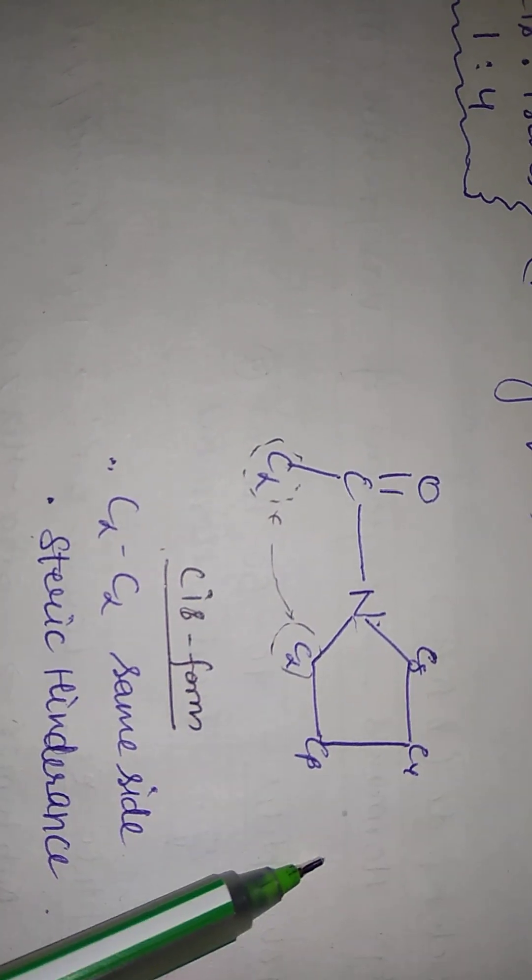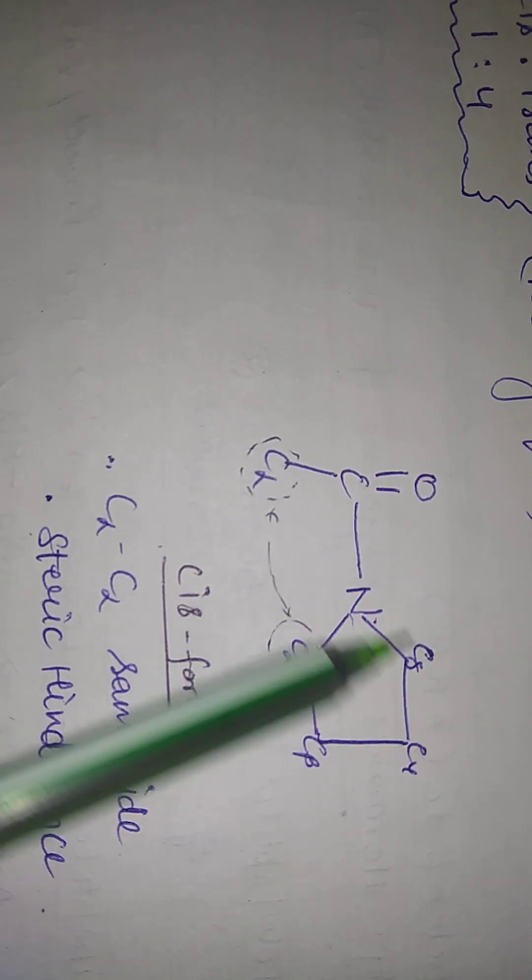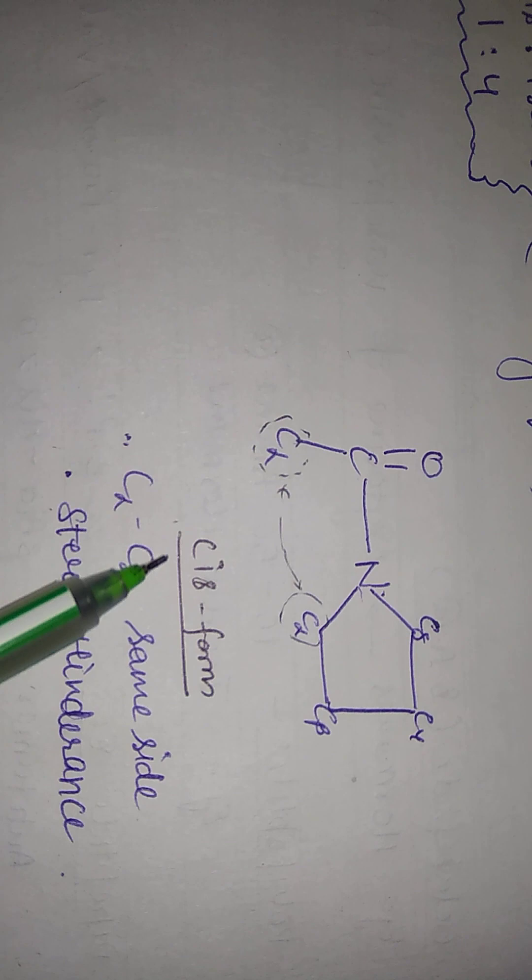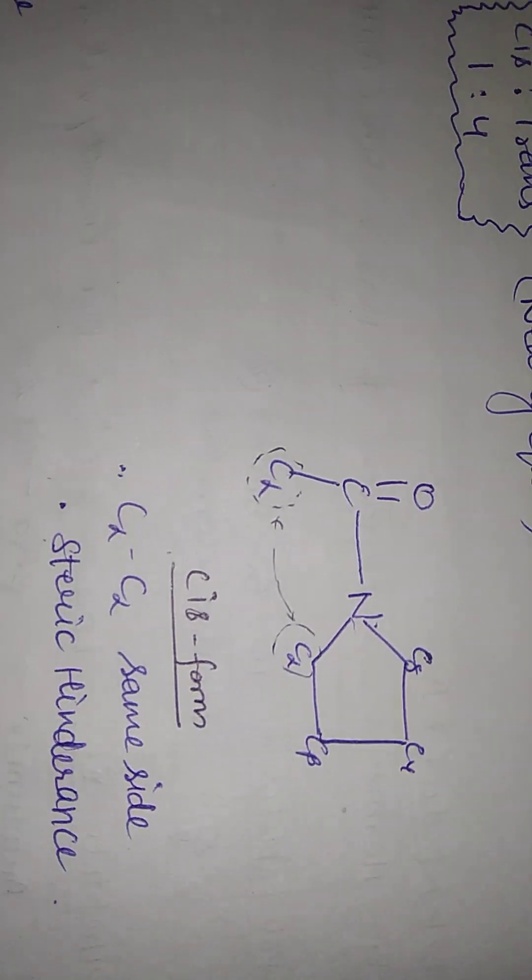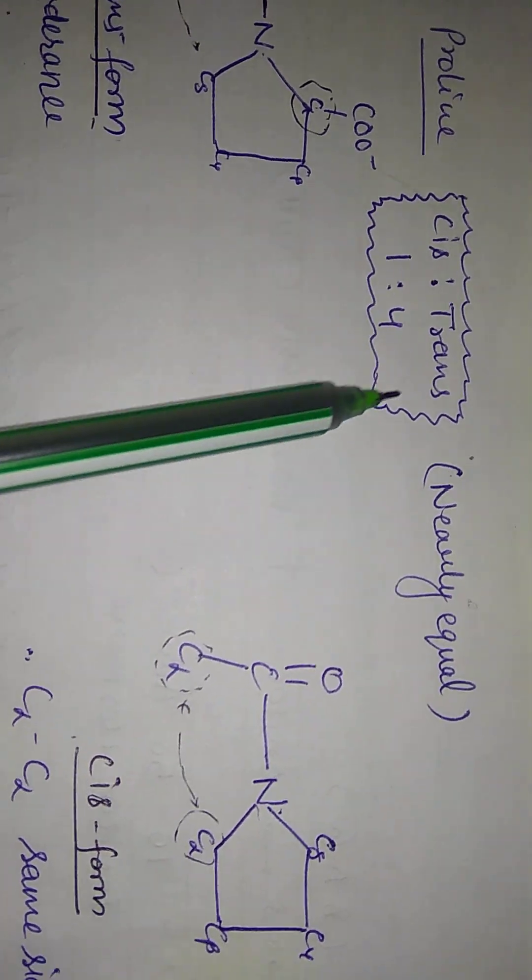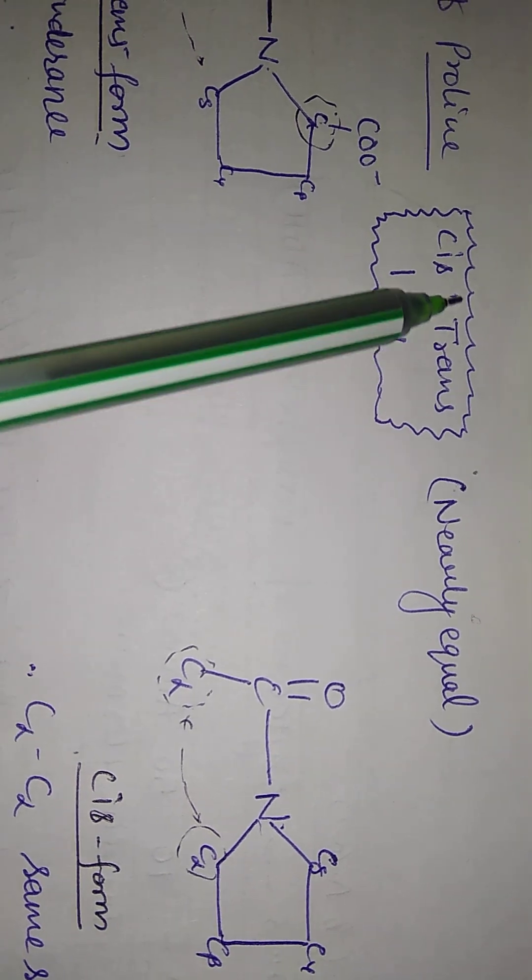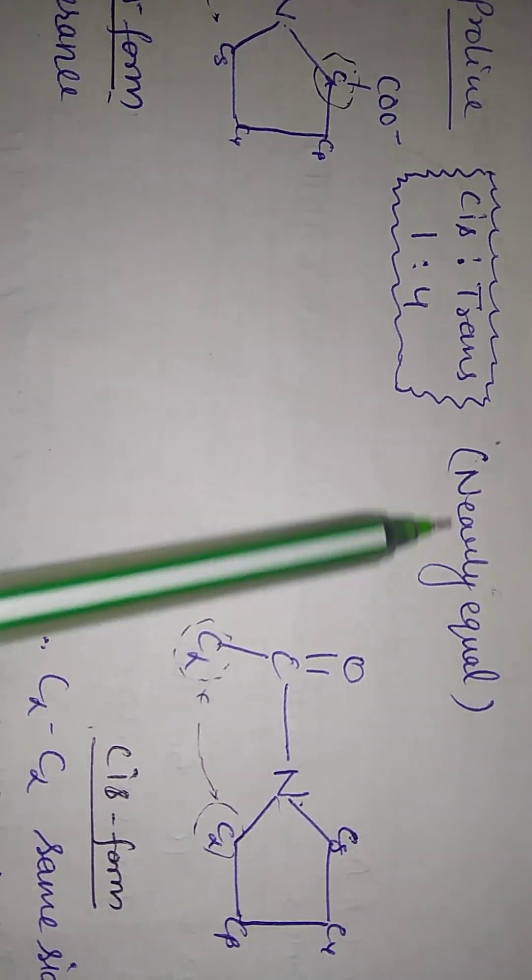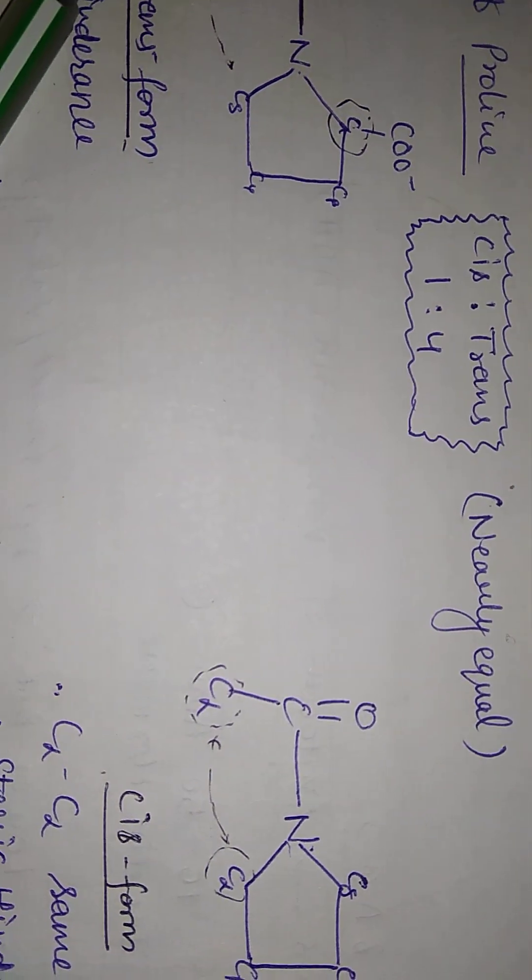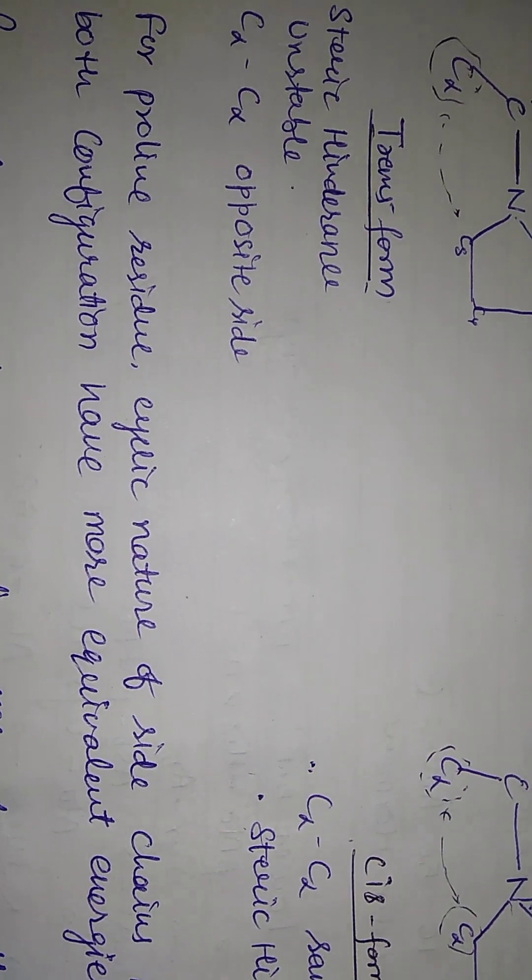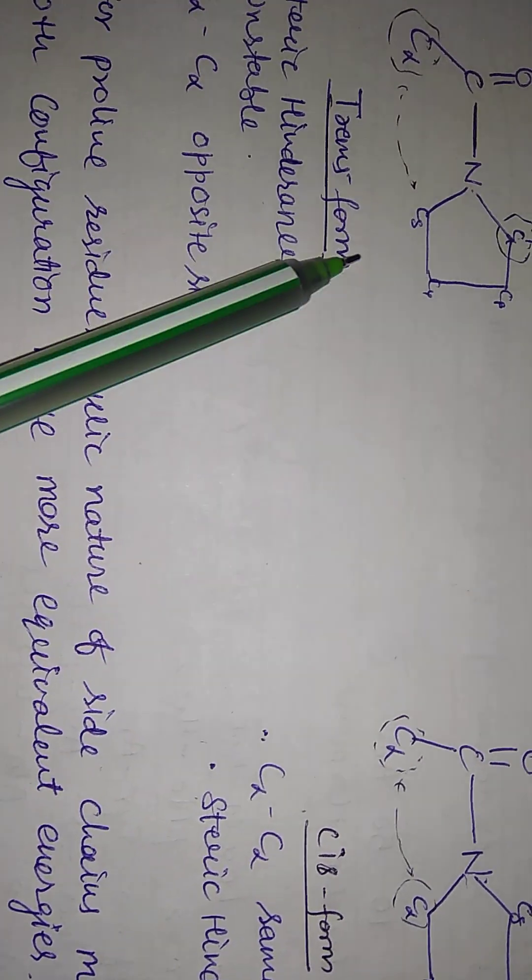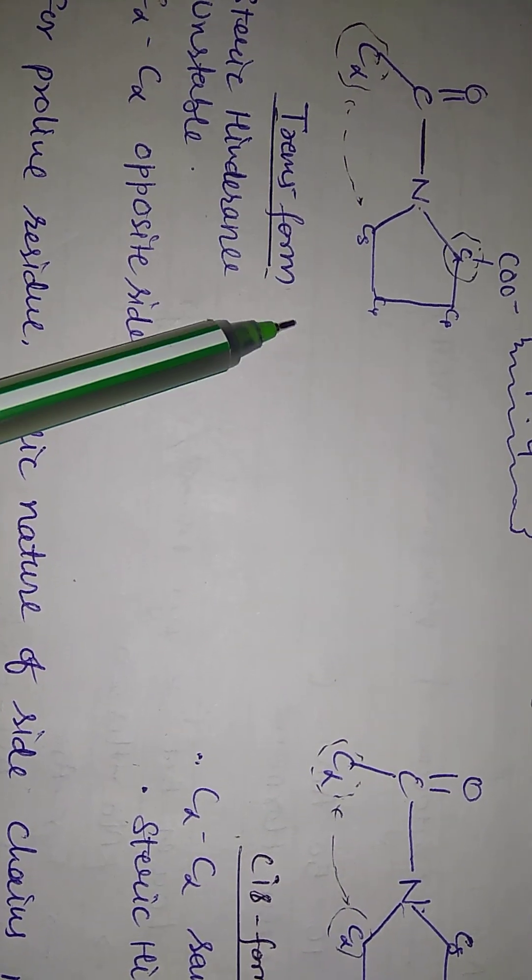Because if it is a cyclic structure, it will be different. If we keep the C-alpha C-alpha, it will be stable. But it is not stable. So it is still a cis trans. So if the proline is in a peptide, we will say that it is a cis trans. And it is nearly equal. This thing is called proline residue. Cyclic nature. The hindrance creates a cyclic nature. That is why it is cis trans.